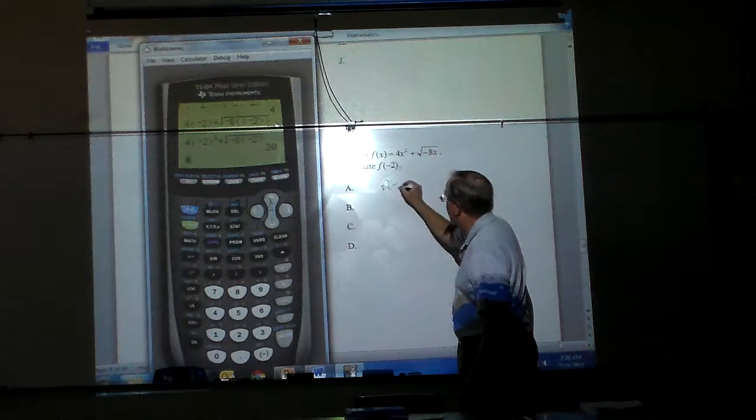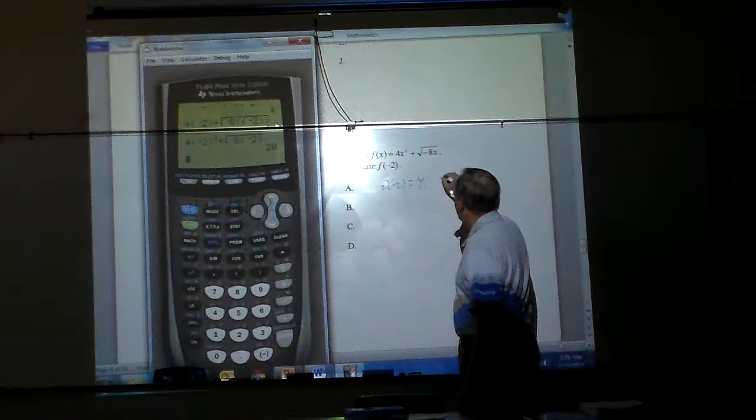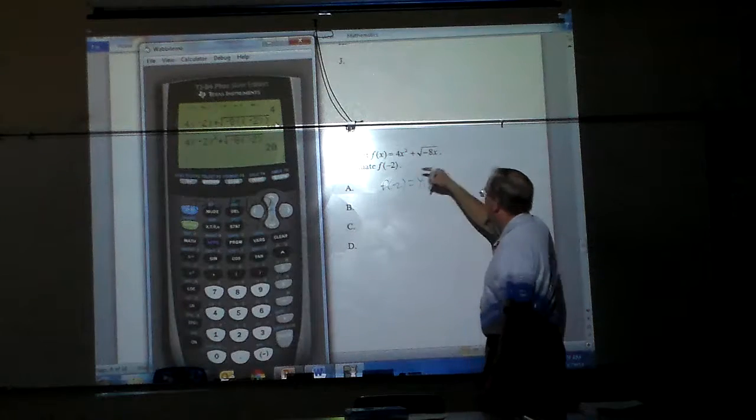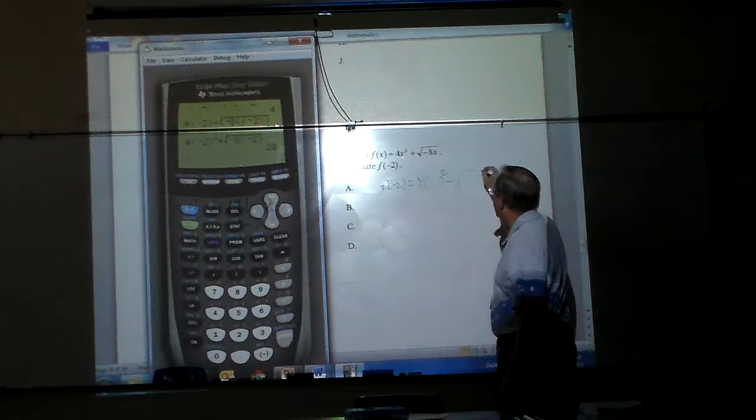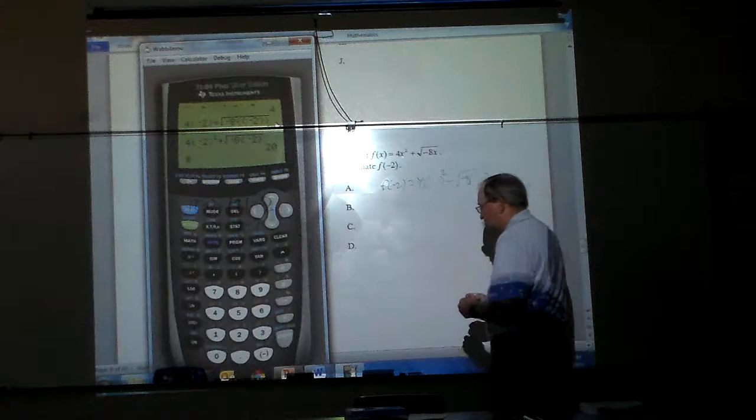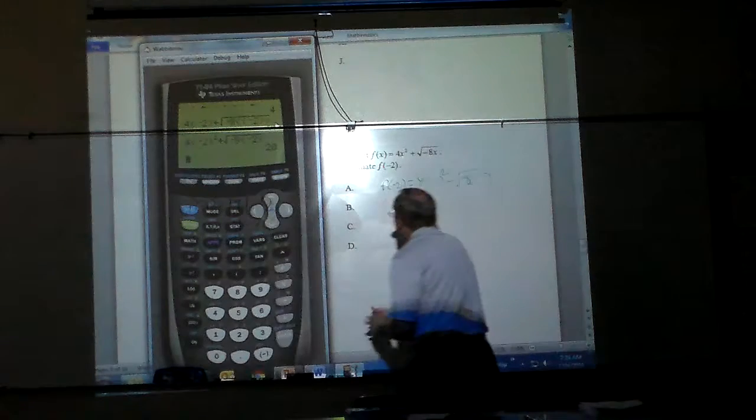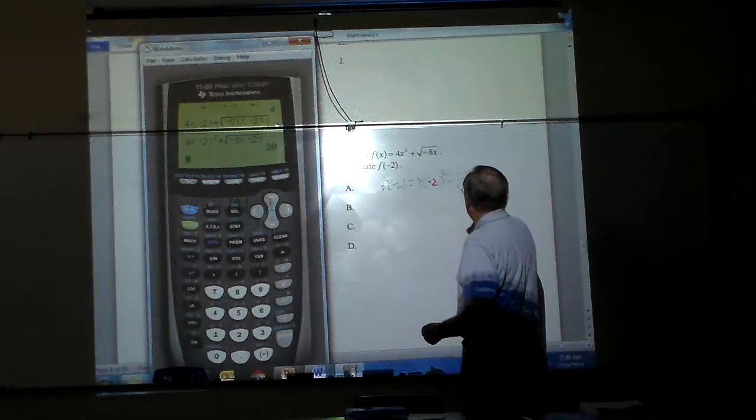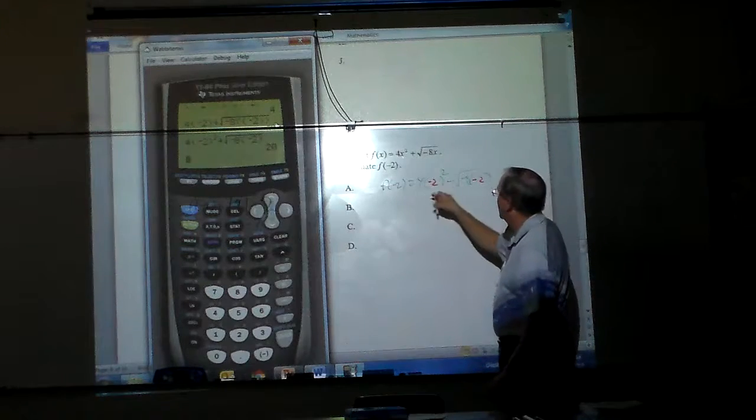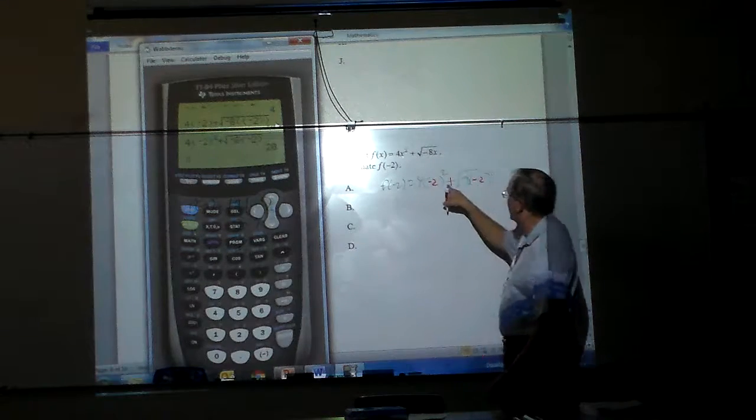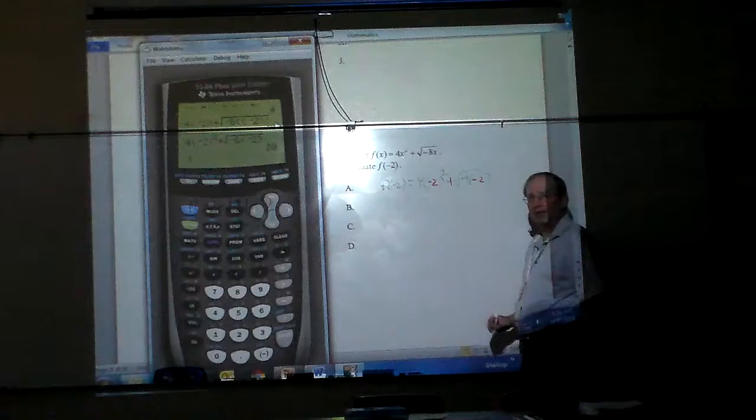Because simply f of negative 2 is 4 times. And everywhere that the x appears, I make parentheses first. And then all I do is go back and plug in that value. Negative 2, negative 2. Did I copy it right? No, I did not. Once again, that was a plus. Still making no mistake.